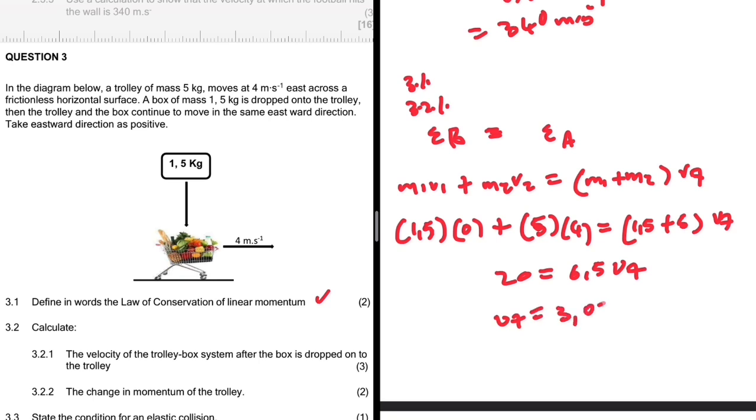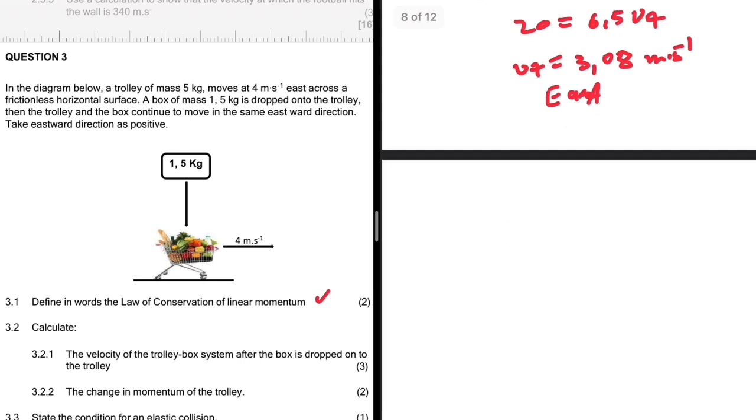So vf is equals to 3.08 meters per second east. So there we go, 3.2.1. 3.2.2, we want to calculate the change in momentum of the trolley. So change in momentum: m vf minus vi. The mass is 5, but the final velocity is 3.08.